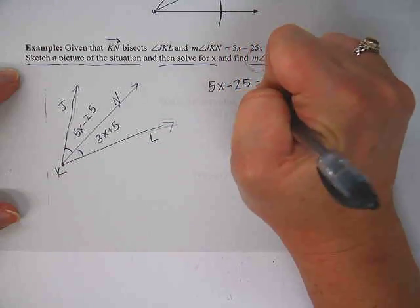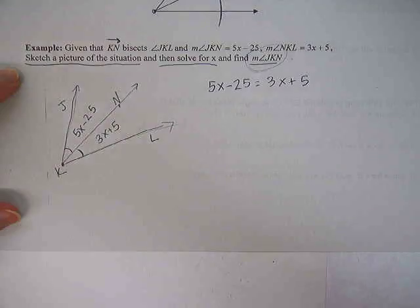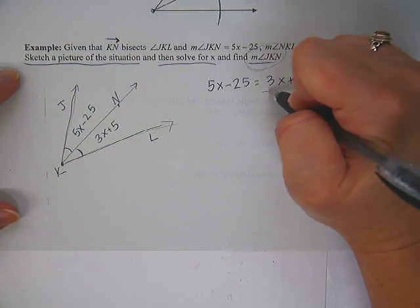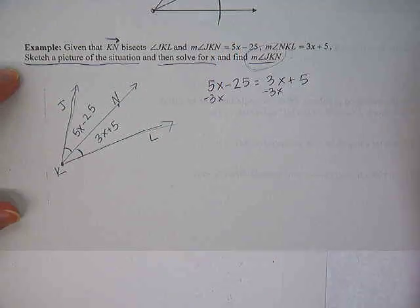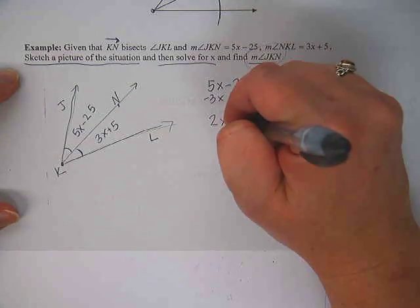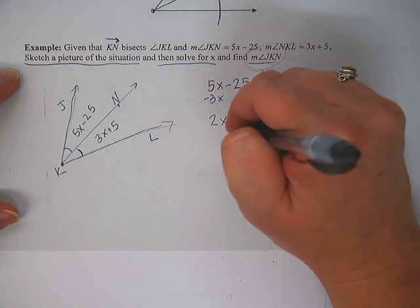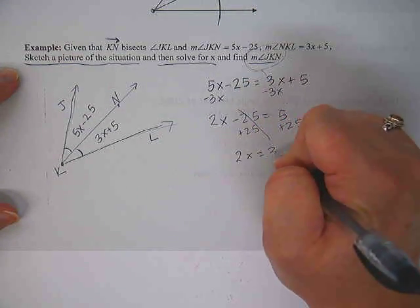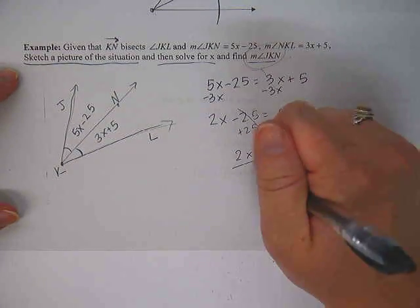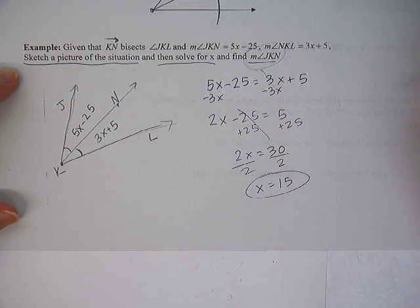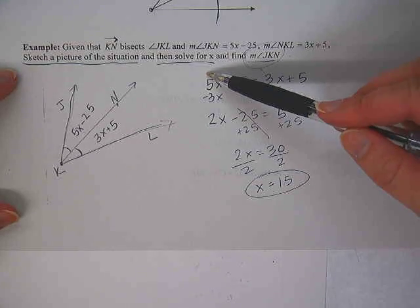We do know they're congruent. So can we just set them equal to each other? Yeah, that would work great, actually. So let's just go 5X minus 25 equals 3X plus 5, because those two angles are congruent. And that simply gives us an algebra problem to solve. What should we move where? Okay, so subtract the 3X to that side there. Cancels here. 5X minus 3X is 2X. Then we can move the 25 to the other side. So 2X equals 5 plus 25, which is 30. And then divide by 2. So X is 30 divided by 2, which is 15.